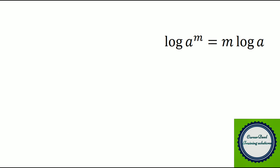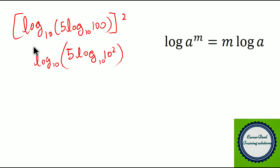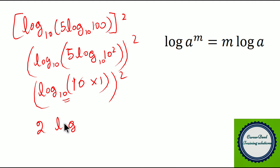Next question: 5 log of 100 to the base 10 to the whole power 2. We write 100 as 10 square, so we have 5 into log of 10 square to the base 10. Using log A power M equals M into log A, we bring the 2 to the front: 5 into 2 into log 10 to the base 10 gives 10 into 1 equals 10. For the second part, log to the base 10 squared is again log A power M format, giving 2 into log 10 to the base 10, which equals 2. The answer is 2.